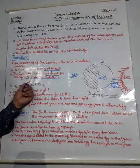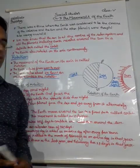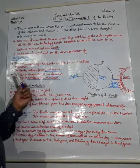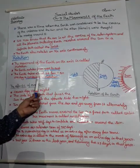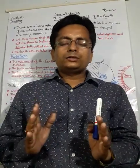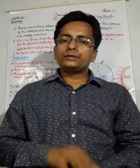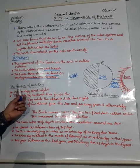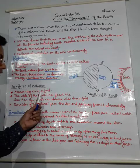The earth rotates from west to east — that is the direction of earth's rotation. The earth takes about 24 hours, or one day, to complete one rotation. One rotation of the earth is completed in 24 hours.